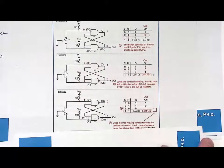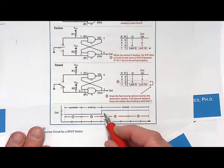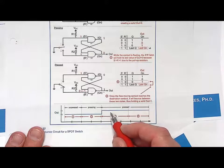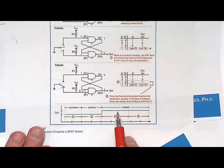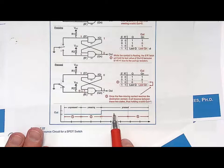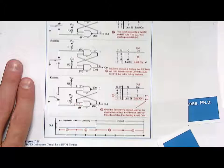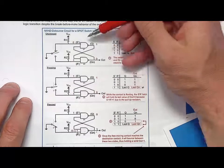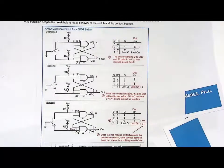This actually solves all the problems. The break before make behavior - where the contact switch was in the middle driven by nothing - was solved by using pull-up resistors to put the S-bar R-bar latch into the store state. And contact bounce is handled because the latch bounces between the reset and store states, both of which output a one. This NAND bounce circuit works for single pole double throw switches, all based on the concept of storing the last value.